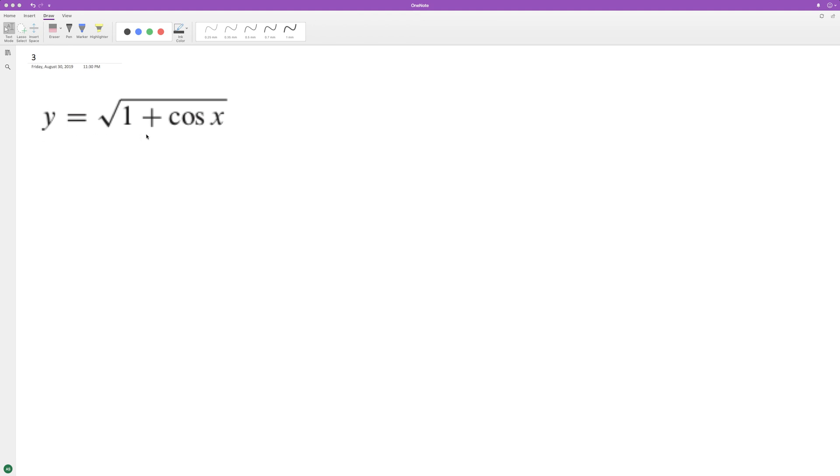Let's find the derivative of this. What we can do to help see this a little bit better, we'll use u-substitution. We'll set u equal to the square root of 1 plus cosine x.